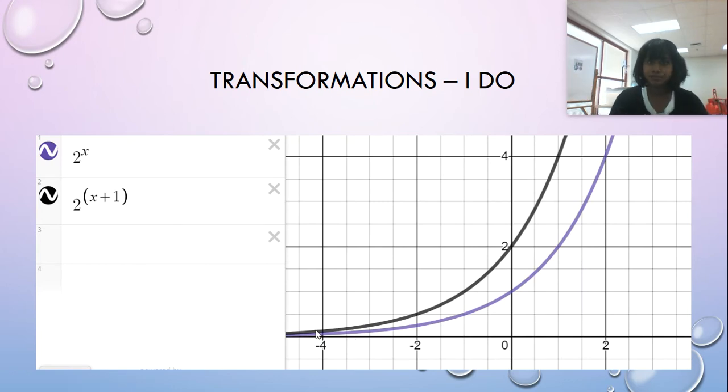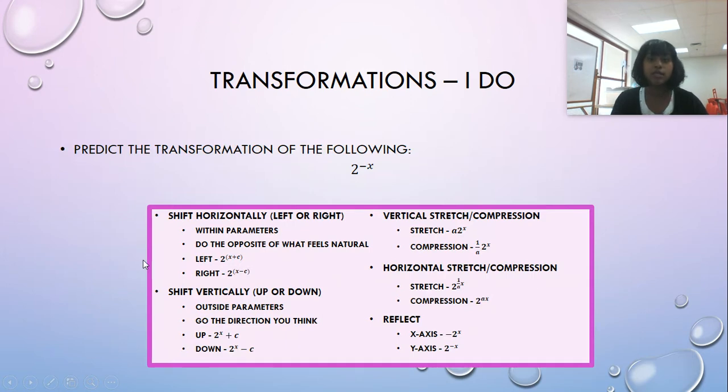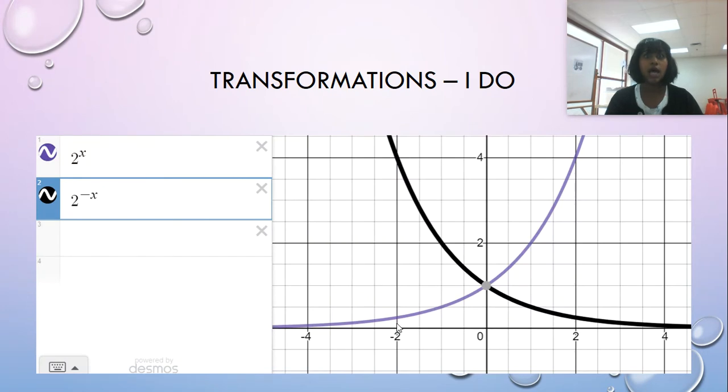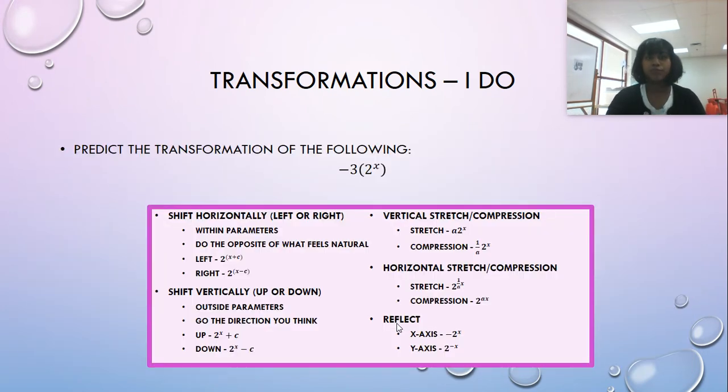Let's do another one. Okay, what about this one? 2^(-x). Well, that's a reflection. And if I look at my cheat sheet, I notice that my reflection is over the Y-axis. So ta-da! And the black is the reflected over the Y. That makes sense to me.